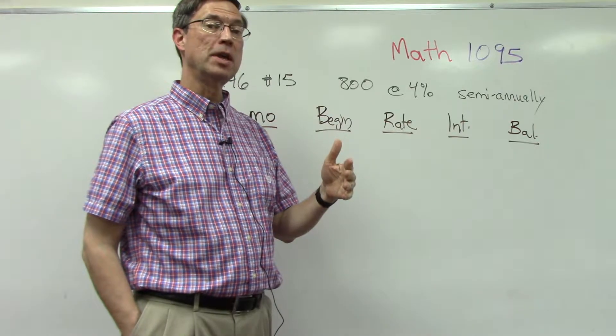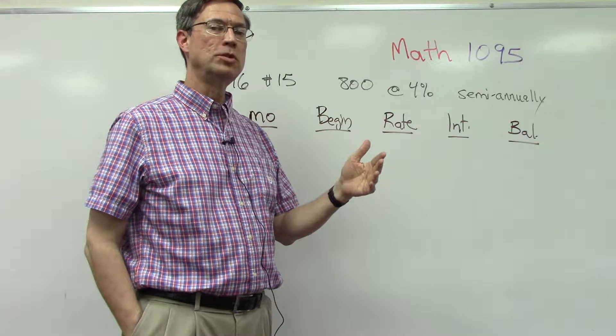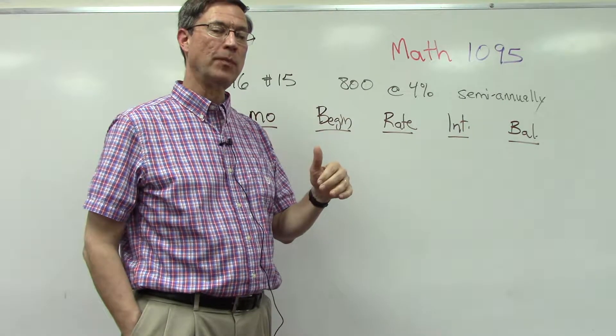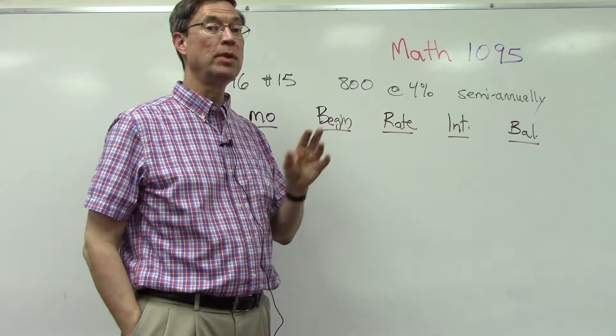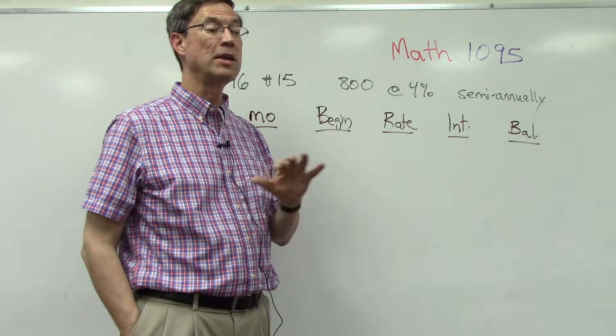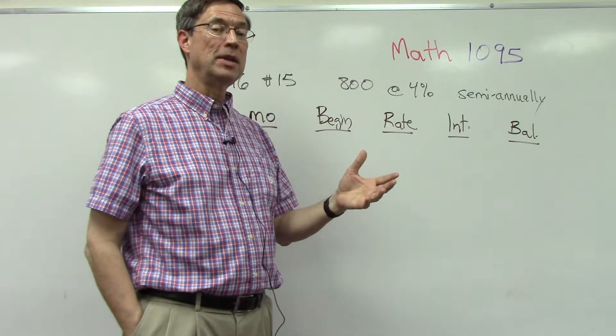Then after the first quarter, first three months, they figure out how much interest you've earned and put that into your account. But then for the next quarter you now have what you started with plus the interest that you earned, and that total is earning more interest. And then at the end of that three months they put that money into your account and now you've got even more money in your account so that...